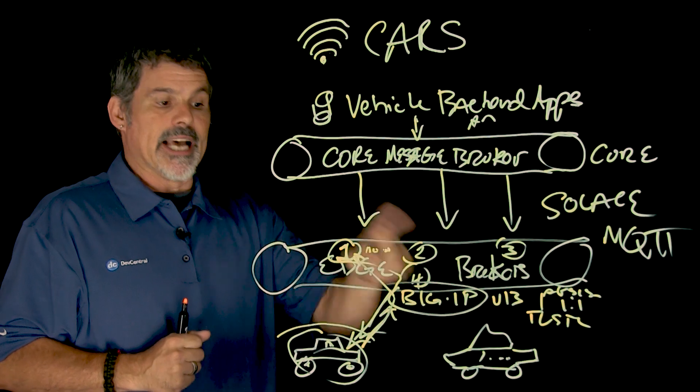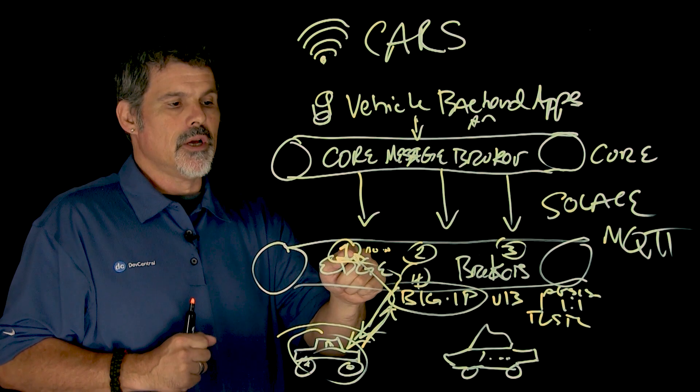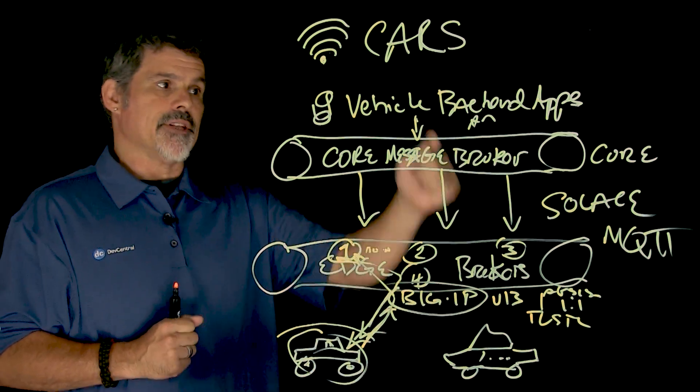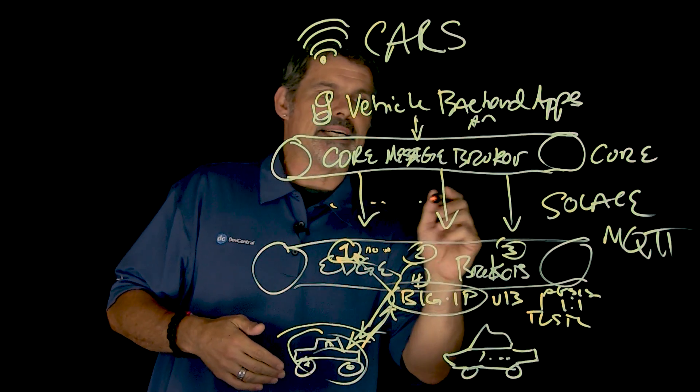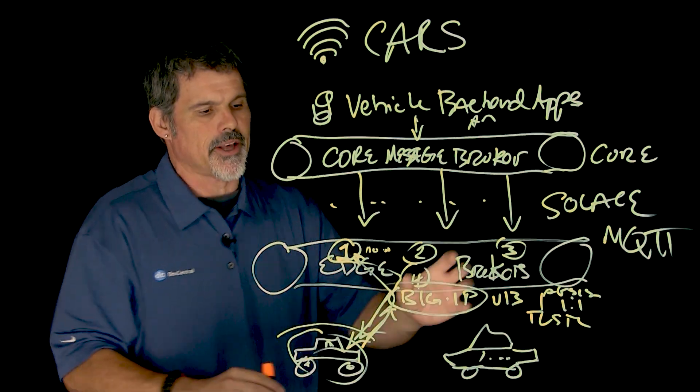the cars are subscribing to software updates. And once that software update gets pushed down, the new message comes along, it then gets alerted there's a new message, and then just comes back to the edge broker to get the update rather than having to travel all the way back. So, this is kind of decoupled, and you kind of don't have to worry,